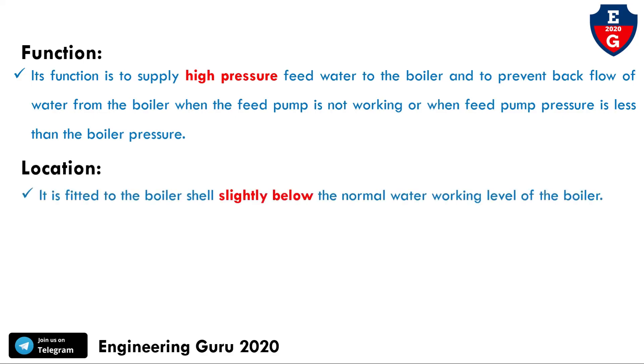Regarding its location, the feed check valve is fitted to the boiler shell slightly below the normal working water level of the boiler.